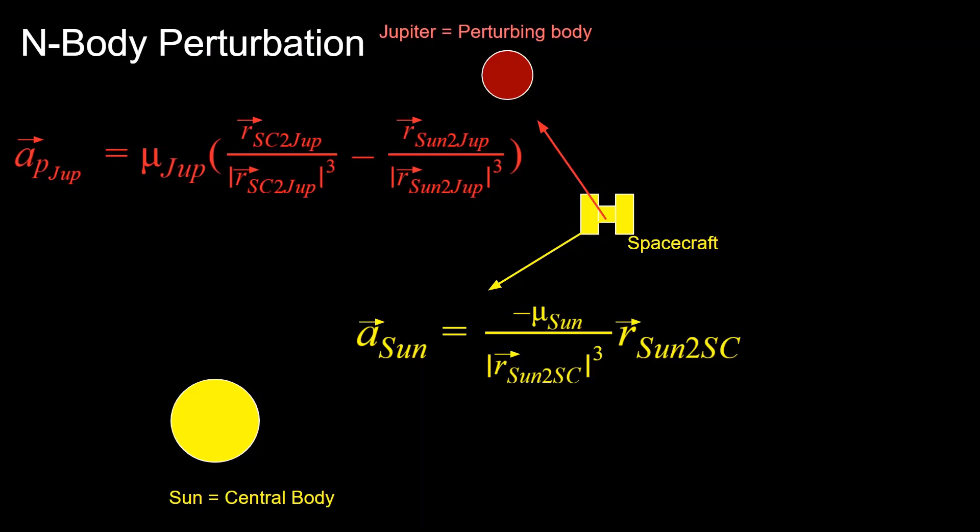Going back to the equations defining the accelerations of the central body and the perturbing body, the acceleration due to the larger body is Newton's universal law of gravitation, and then the perturbing body acceleration is a modified version of that equation. These equations are a function of the vector pointing from the Sun to the spacecraft, the vector pointing from the Sun to Jupiter, and then the vector pointing from the spacecraft to Jupiter.